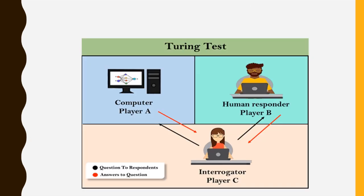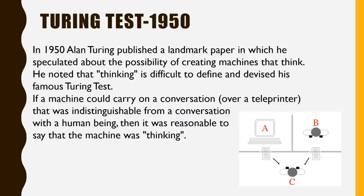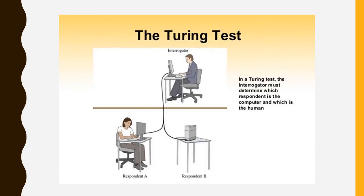In 1950, Turing proposed an interesting test for computers to check whether they can communicate just like humans, either through text or speech. In this test, one evaluator has to communicate with a human and a computer simultaneously without actually knowing which one is the computer. If at the end of the test the evaluator is unable to make out which one is the computer, the computer is said to pass the Turing test.